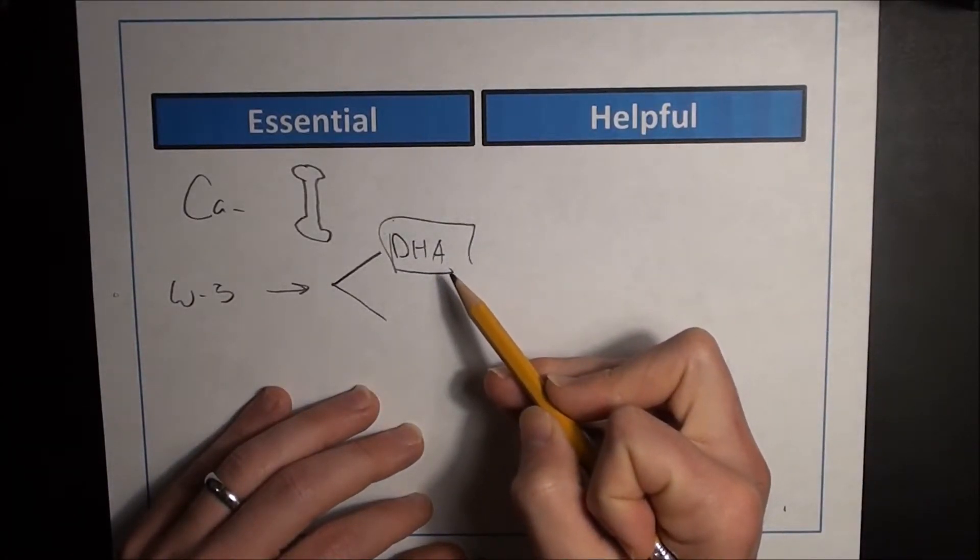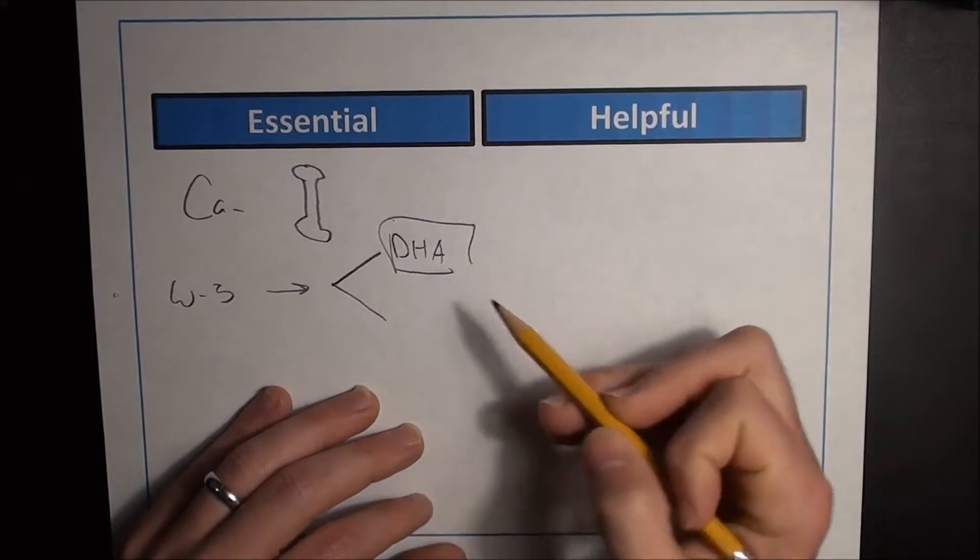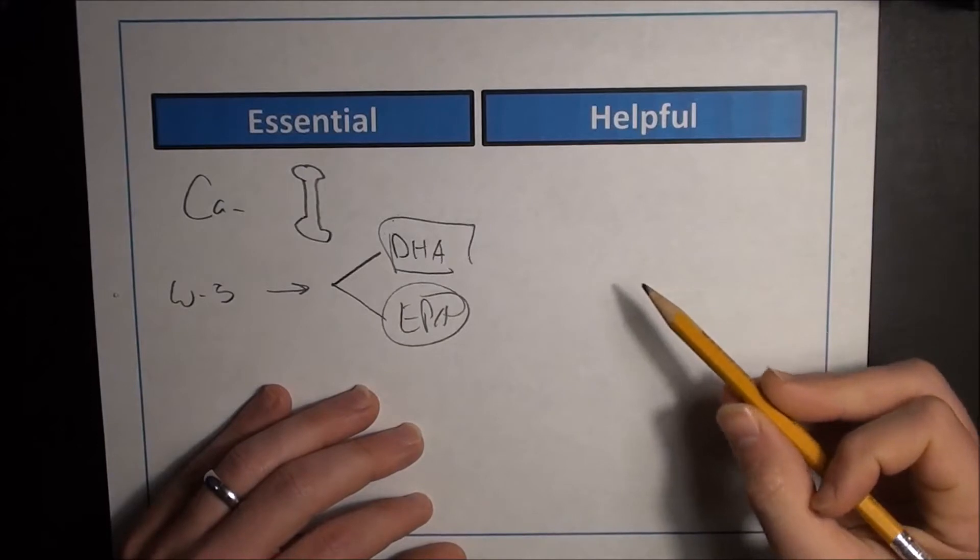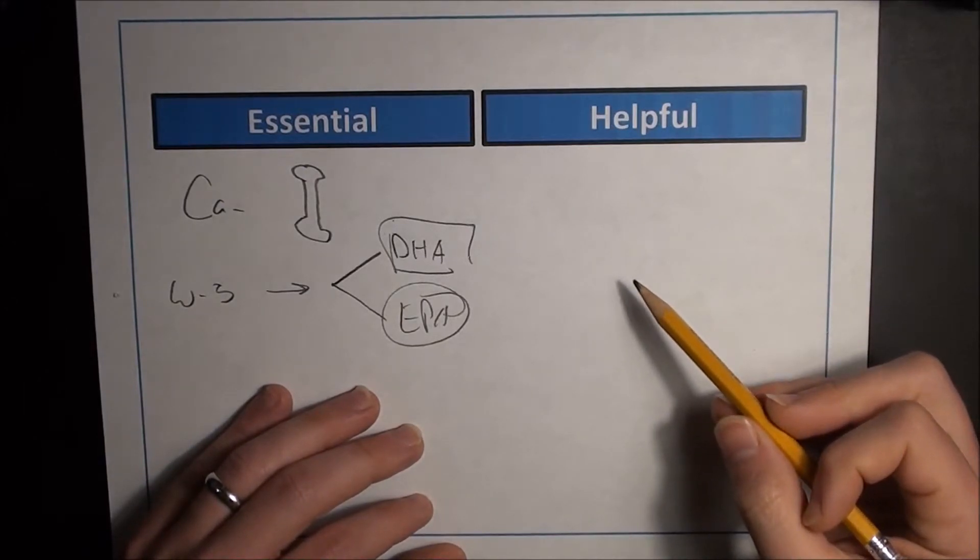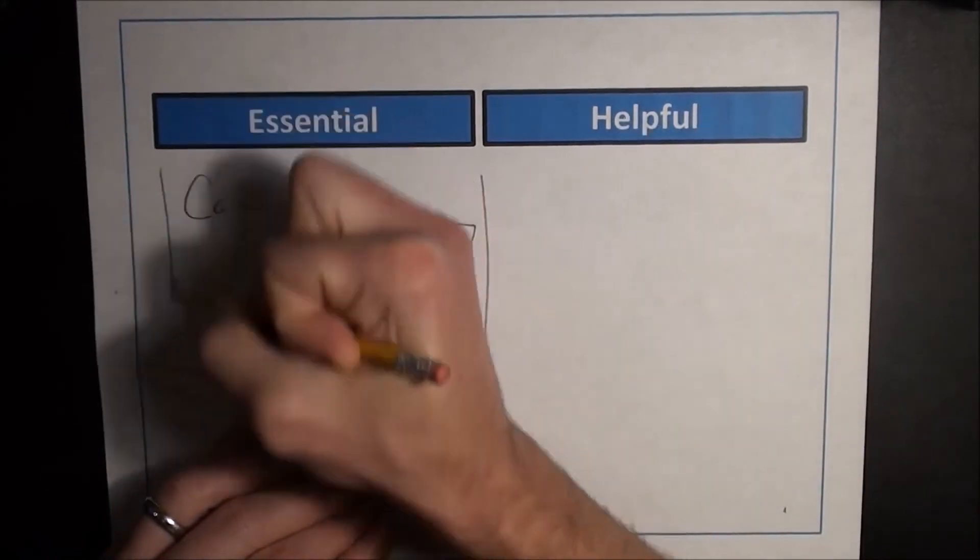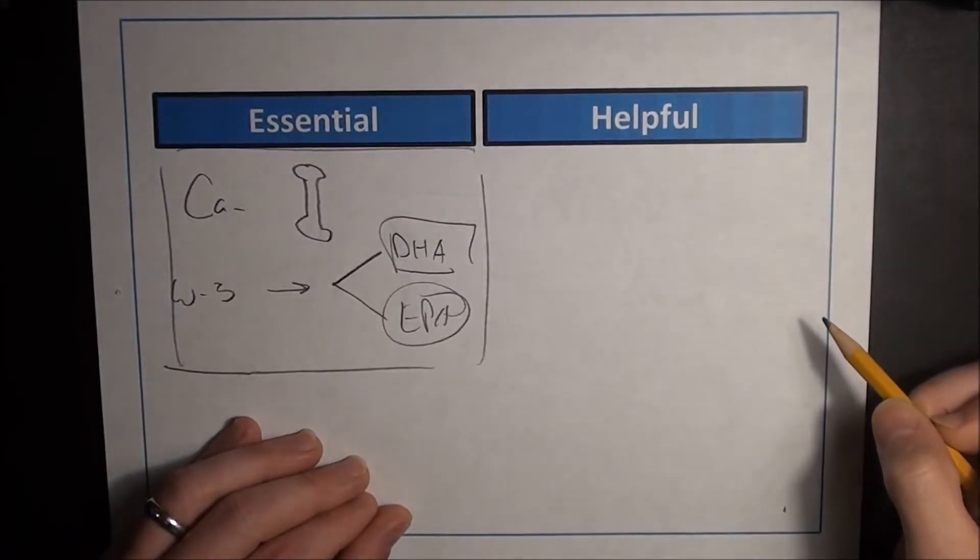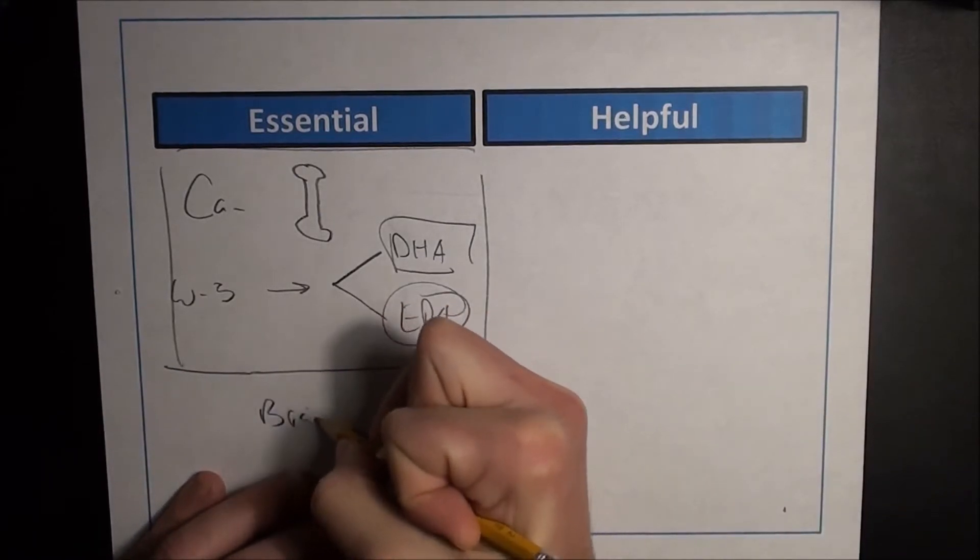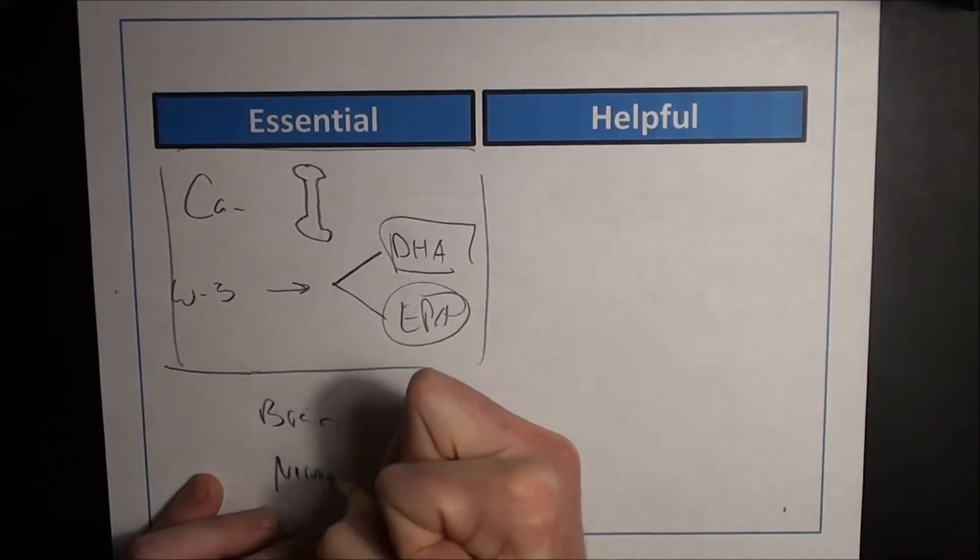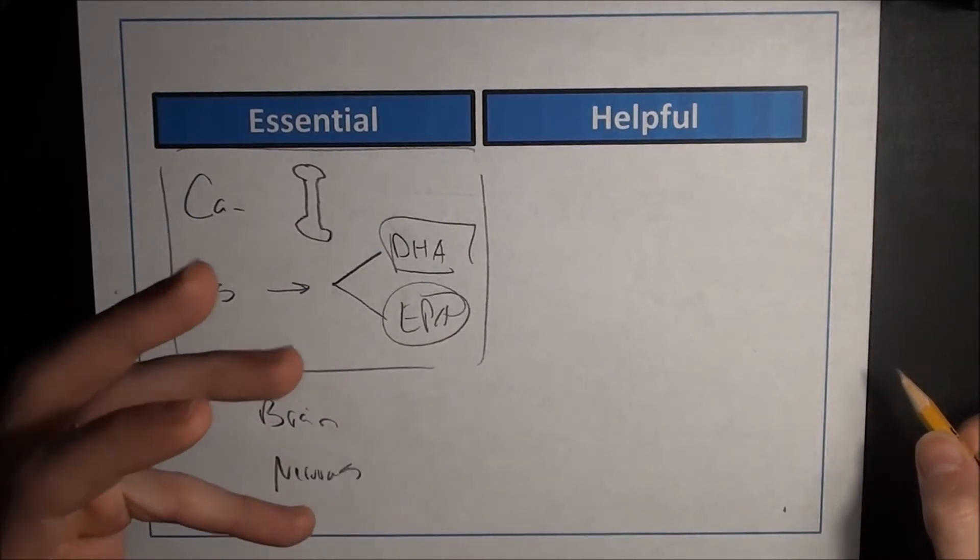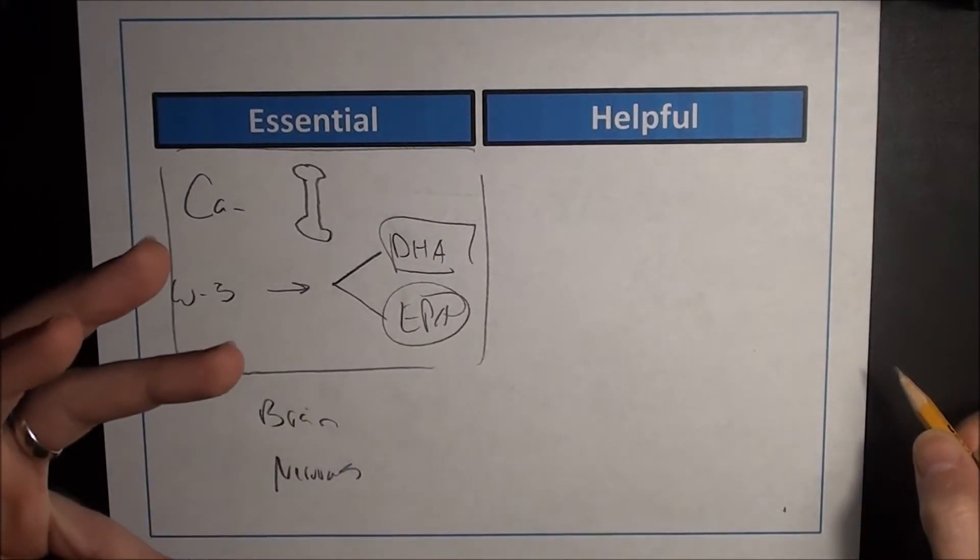Your other key omega-3, EPA, is important for continuing to develop cell membranes and structure throughout the body. These are two reasons why it's essential to have essential fatty acids in your diet: for the development of your brain and nervous tissue throughout the body, things that are important for the firing of neurons and muscular motor movement in general.